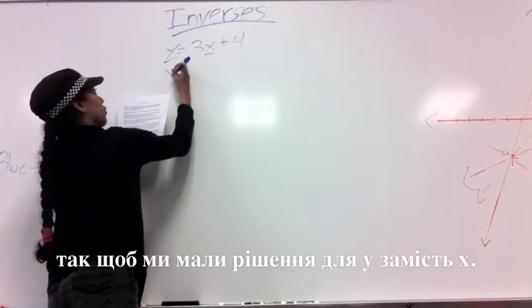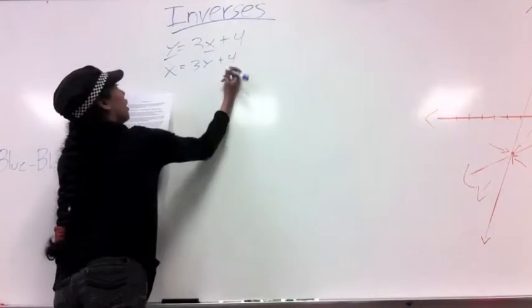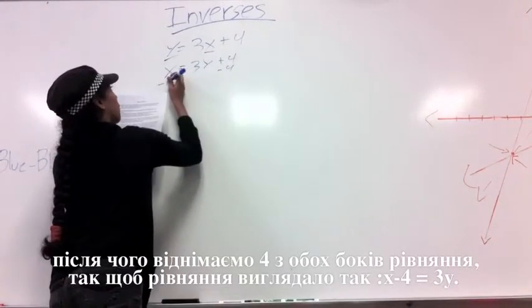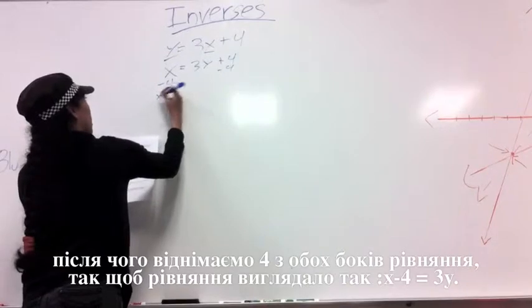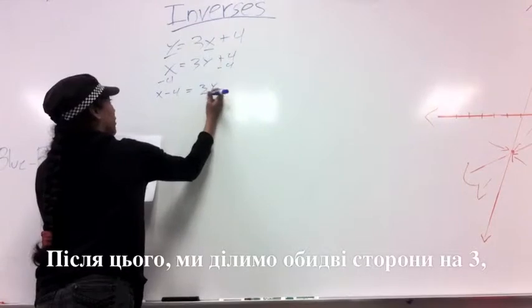This problem will now be transformed to x equals 3y plus 4. We then subtract 4 from either side so that we have x minus 4 equals 3y.